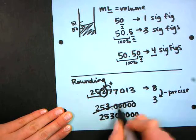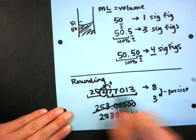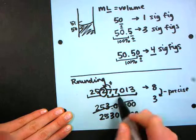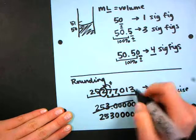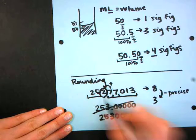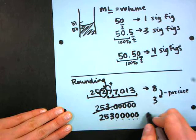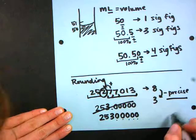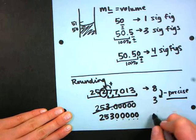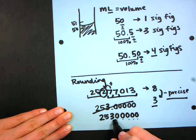So these zeros are now covering up 77,013, and we don't know what it is but they're covering up this huge value. And because they cover that, we're less precise, right? Which we said we would be. We're at three sig figs which we said we would be, but these zeros are just holding a place.